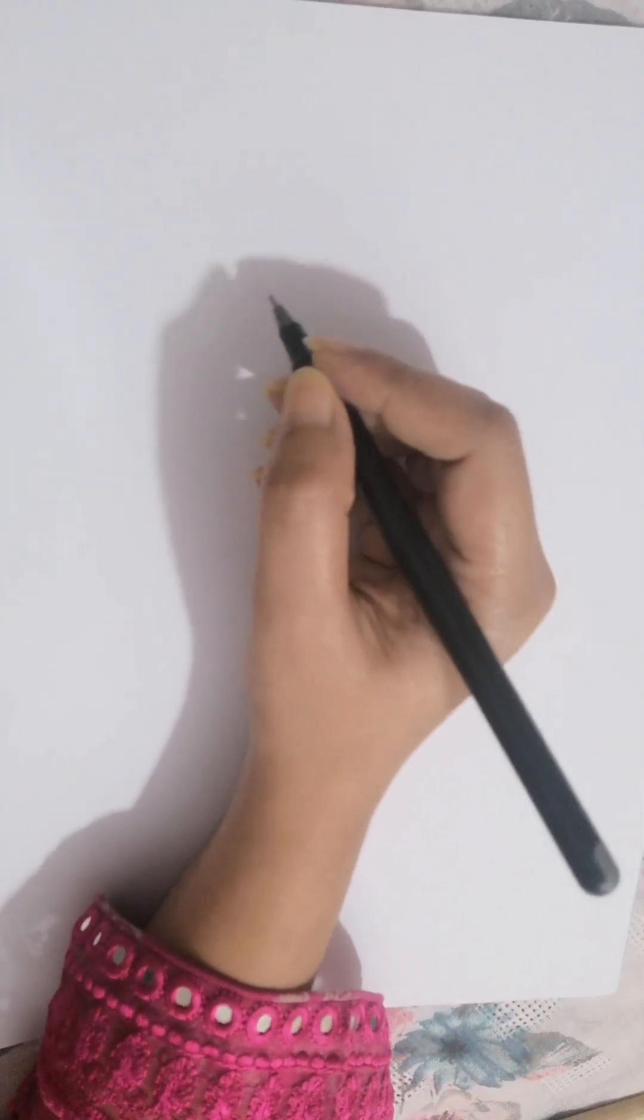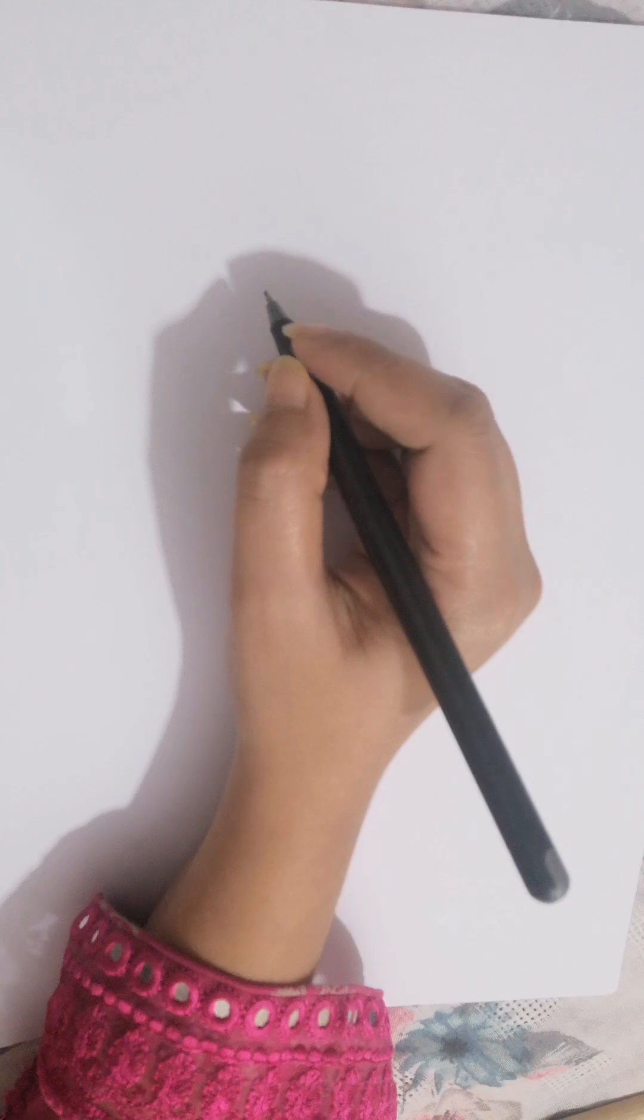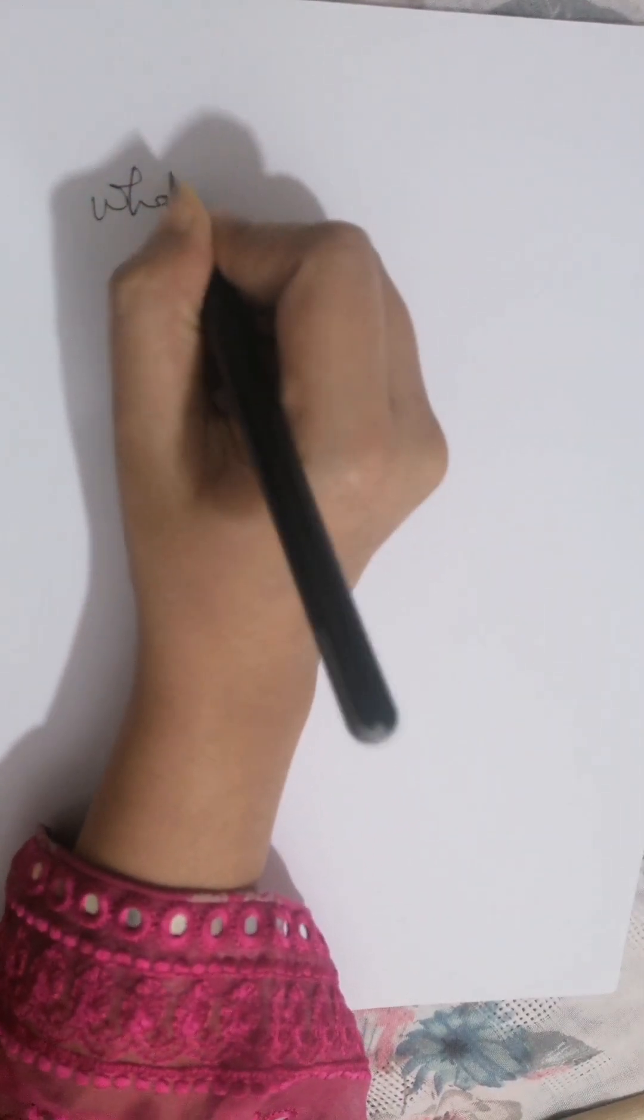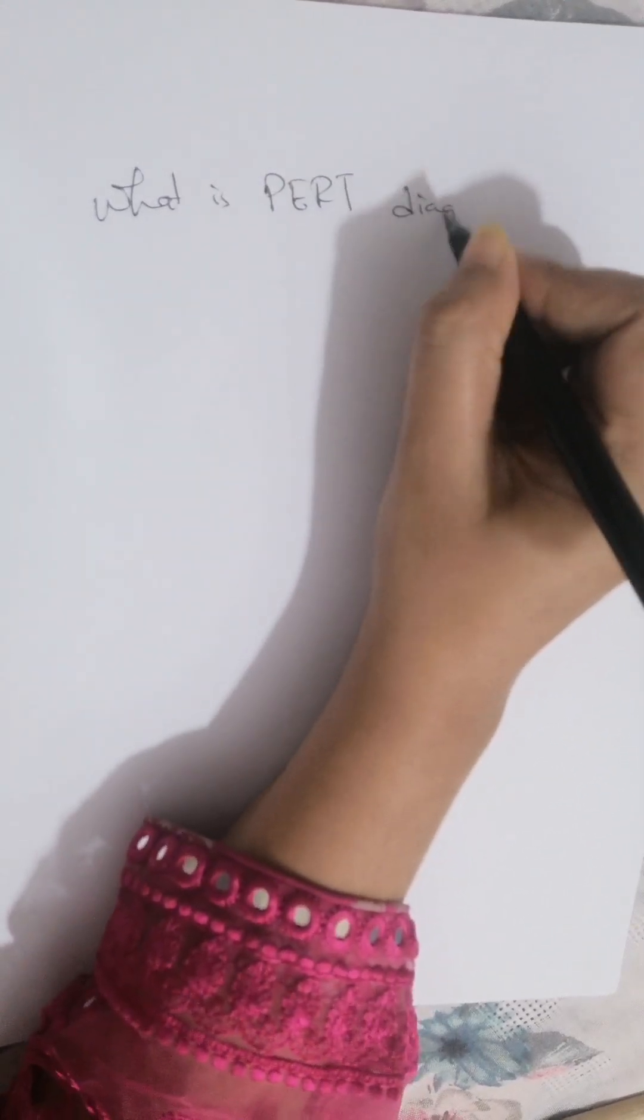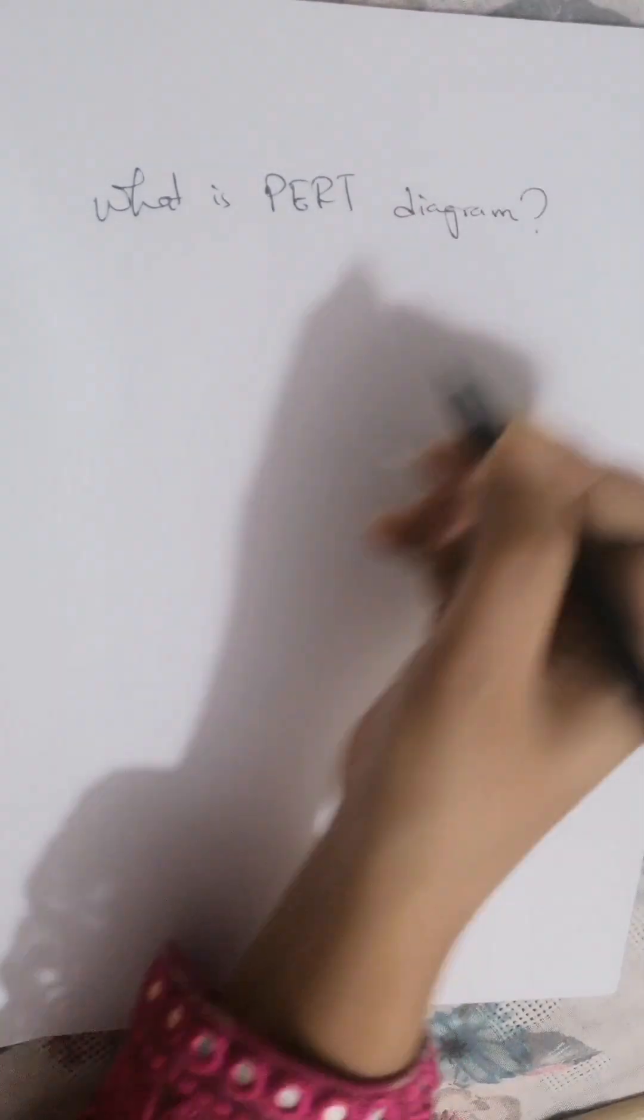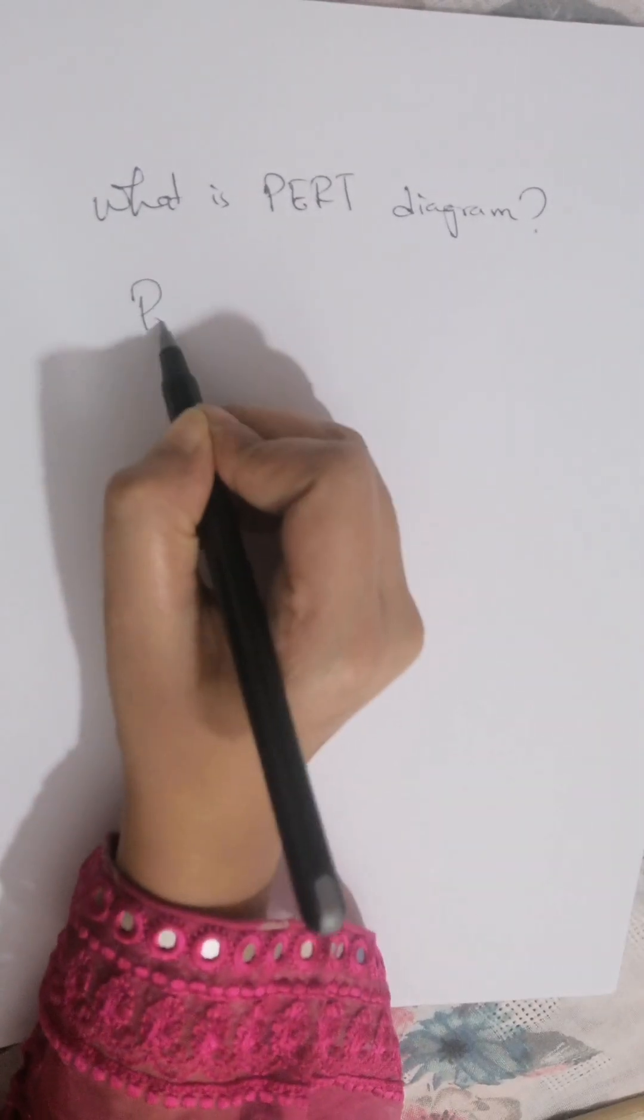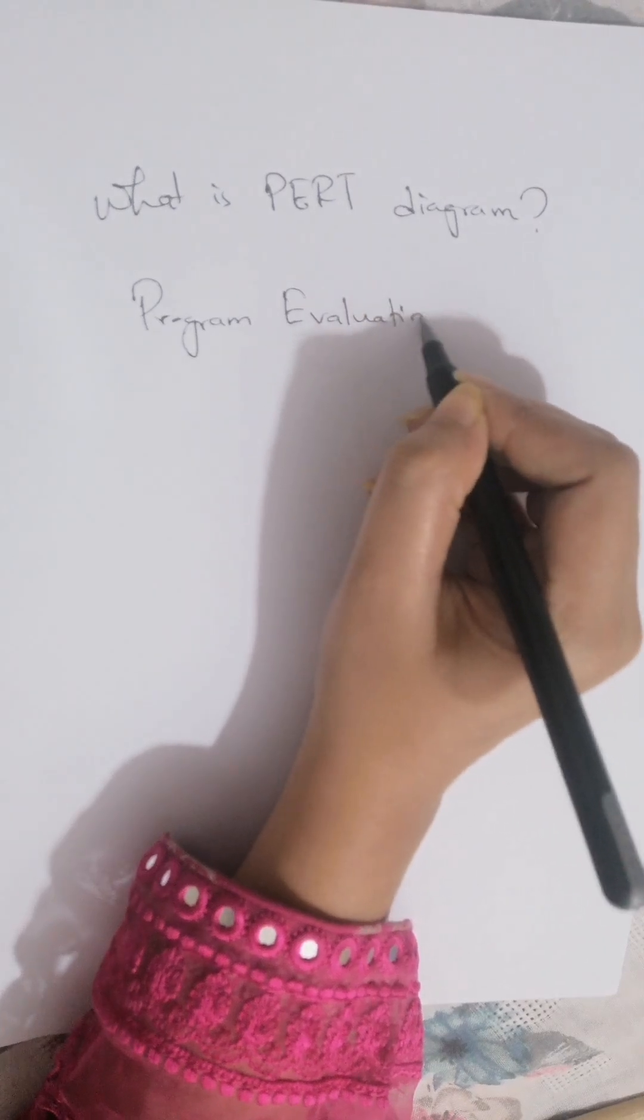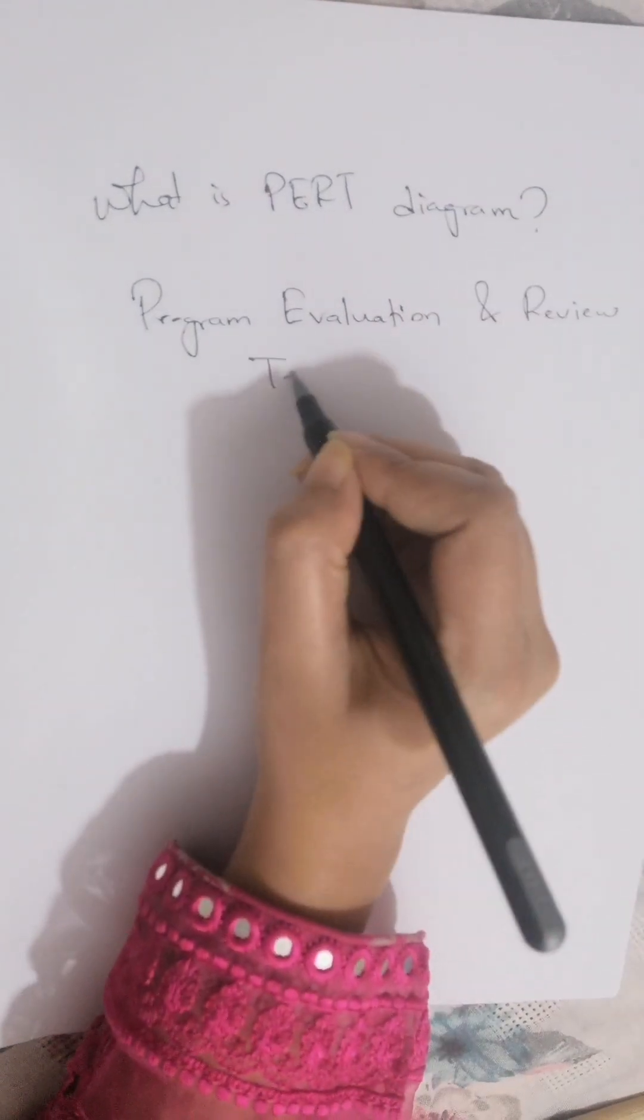Hello everyone, today we will learn PERT diagram. In short, we say PERT diagram. What is PERT diagram? PERT diagram is the short form of Program Evaluation and Review Technique.